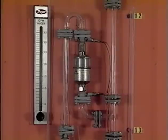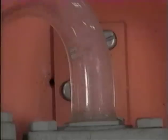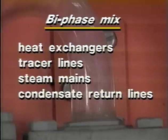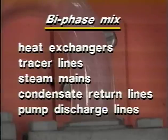Bi-phase systems contain both condensate and live or flash steam in the same space. Heat exchangers, tracer lines, steam mains, condensate return lines, and in some cases pump discharge lines may contain a bi-phase mix.